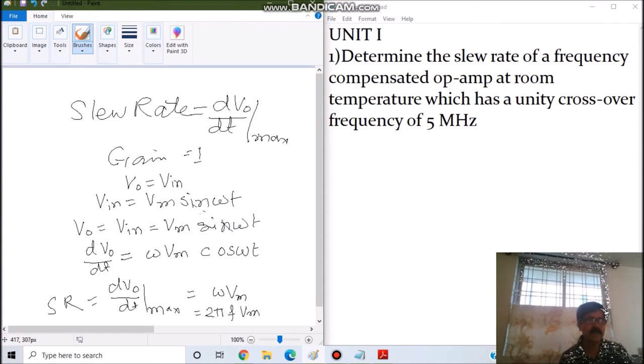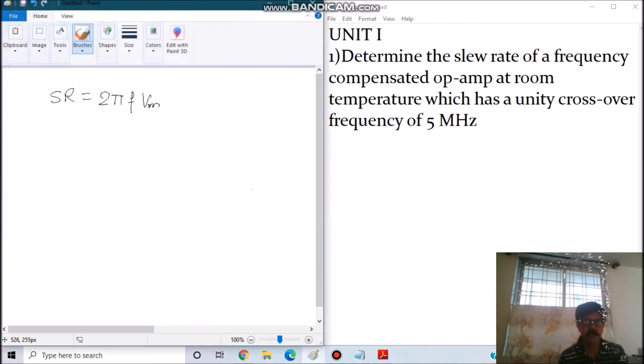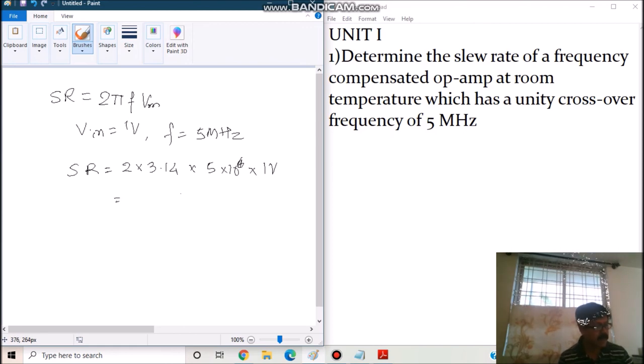Now we can calculate the value of slew rate as 2 pi f Vm. The value of Vm is equal to 1 volt and given frequency is 5 megahertz. So the slew rate equals 2 times 3.14 times 5 times 1, which comes out to roughly 31.4 volt per microsecond. As we know, slew rate is defined by the unit volt per microsecond, so the solution is 31.4 volt per microsecond.